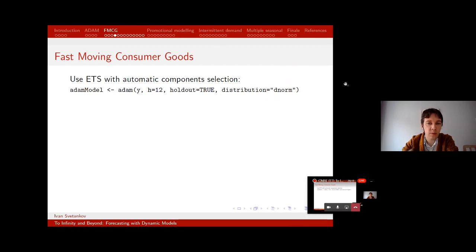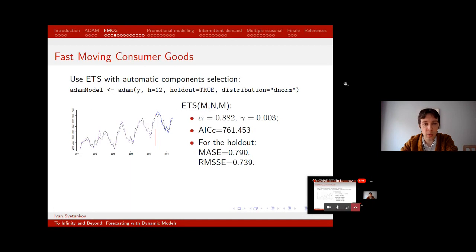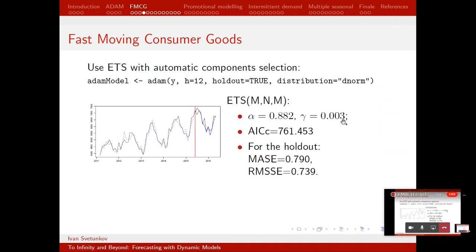I use normal distribution for this case. And here is what we get. So the purple line here shows how the model fits the data. The blue line shows the point forecast and the model automatically selected MNM model. So multiplicative error, no trend and multiplicative seasonality. Some parameters, not very useful or informative, but here they are. Information criteria. This is quite useful when you want to compare different models. The lower this value is, the better the model is, very roughly. And for the holdout, I also report MACE and RMSSE just to make a point or to see how it performs on average for this specific small part of data.